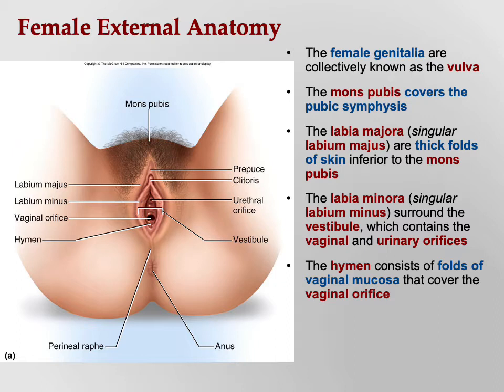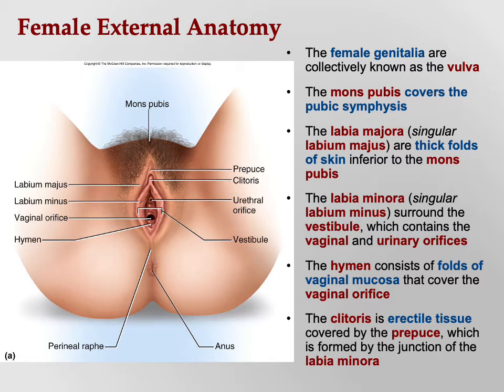There used to be a belief that an intact hymen indicated virginity, but activities like riding a bicycle or gymnastics can break the hymen. Sometimes when the hymen is first broken there may be some blood. The clitoris is erectile tissue covered by a prepuce — a foreskin-like structure similar to that of the penis.